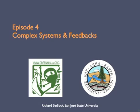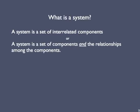These two concepts are fundamental for understanding how Earth's climate operates. Scientists refer to Earth's climate as a complex system. What's a system? Many definitions exist, but my preference is something like the following: a set of interrelated components, or a set of components and the relationships among those components.